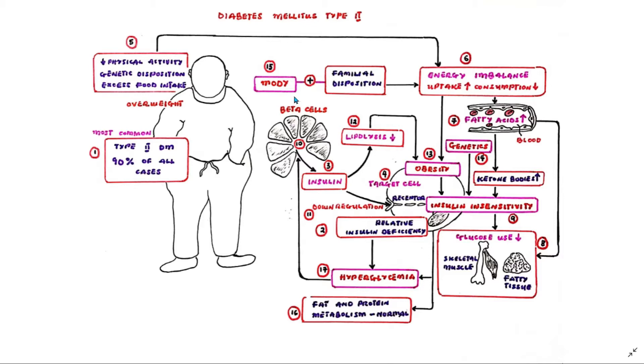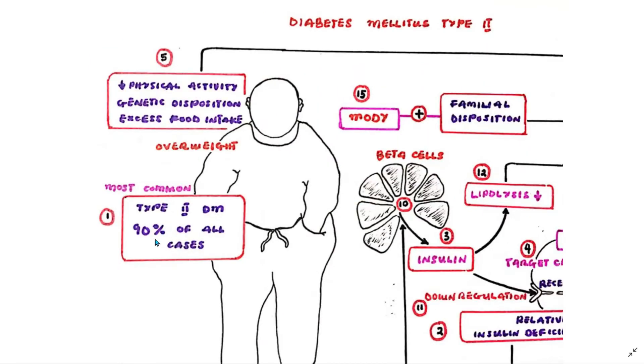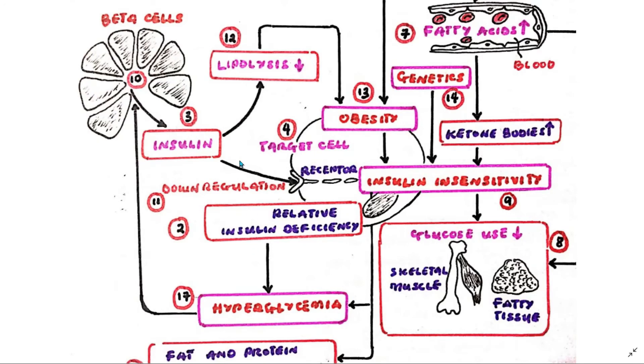Type 2 diabetes mellitus is very common and makes up about 90% of all cases of diabetes mellitus. Genetic disposition plays a role in development of this type of diabetes mellitus. However, there is a relative insulin deficiency.